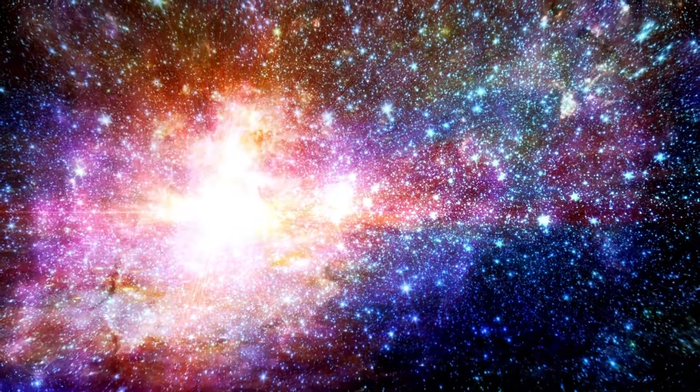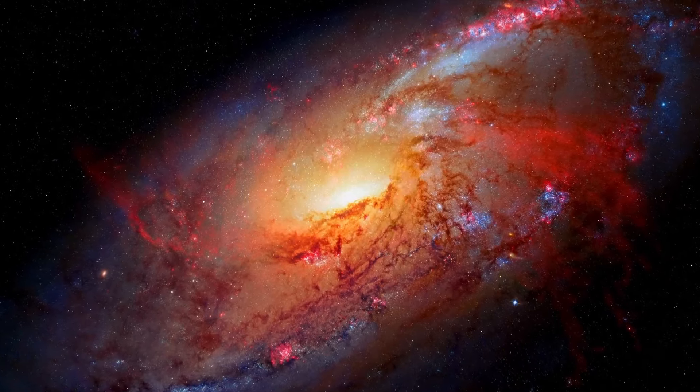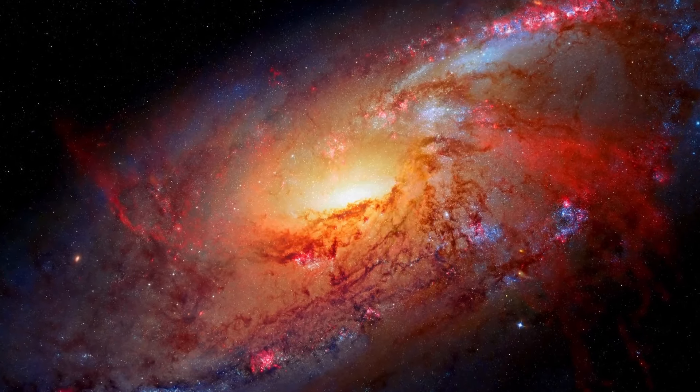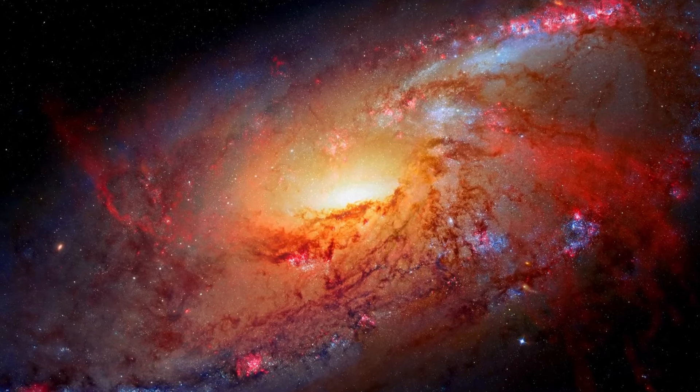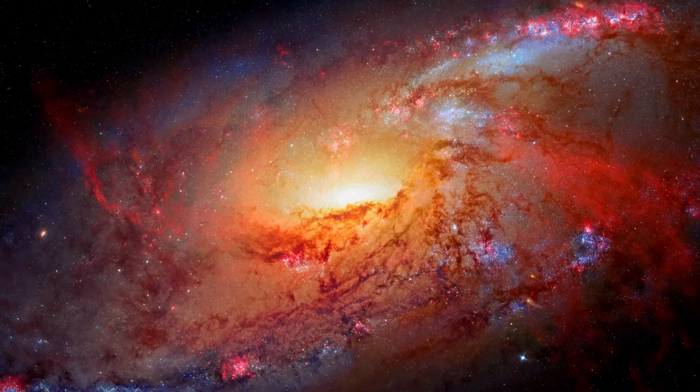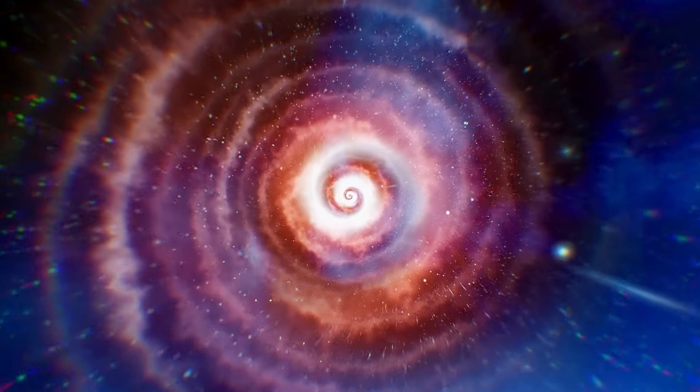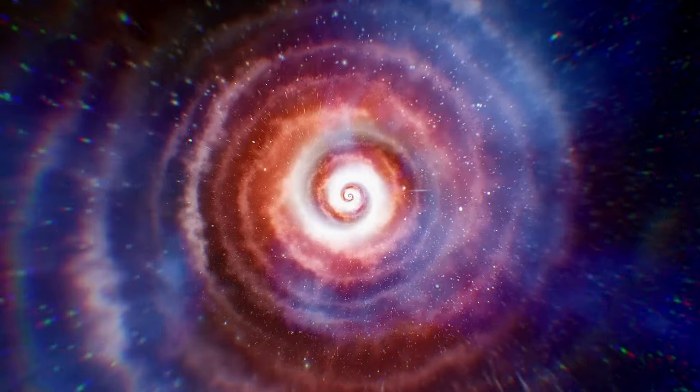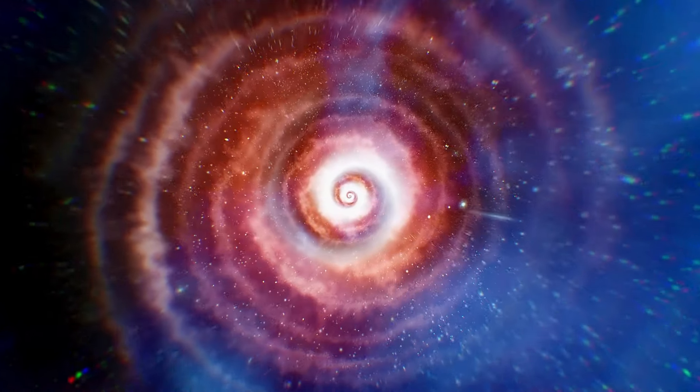Next in line were the Population 2 stars, forming a late but still significant chapter in the universe's early days. Their original materials were loaded with heavy elements, particularly iron. Many of them went through their stellar life cycles, blasting into supernovae and adding more heavy elements to the universal blend.